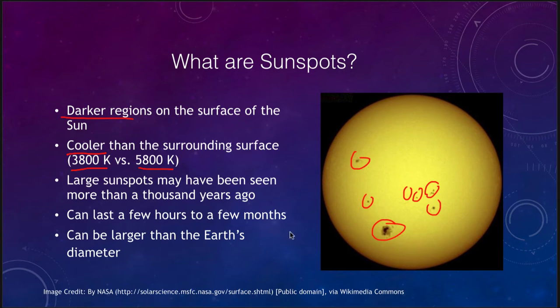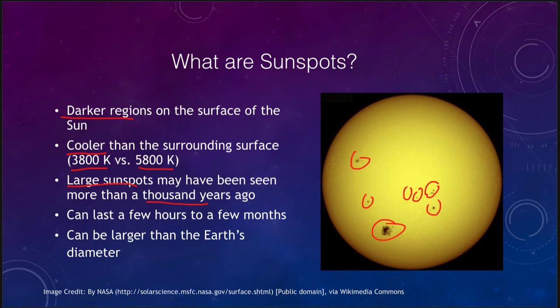If you could actually scoop out that material and put it out in space, it would glow an orangish-red color. So they are not really dark areas or a view into the interior of the sun — they are just cooler regions of the surface. Large sunspots may have actually been visible more than a thousand years ago, since a large enough sunspot could be seen with the naked eye, although it is very dangerous to look at the sun directly.